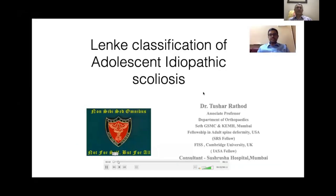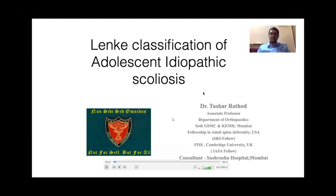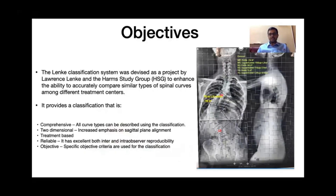I am going to discuss the Lenke classification in a brief nutshell. Previously we had the King's classification, which was based mainly upon the coronal plane corrections. Now we know there is a sagittal component to deformity as well. The King's classification was mainly based upon the posterior-based construct, which imparts significantly less corrective force compared to modern day segmental instrumentation. So there was a need to define the curve in both coronal and sagittal planes, and that's when Laurence Lenke and the Harm study group came out with a new classification system.